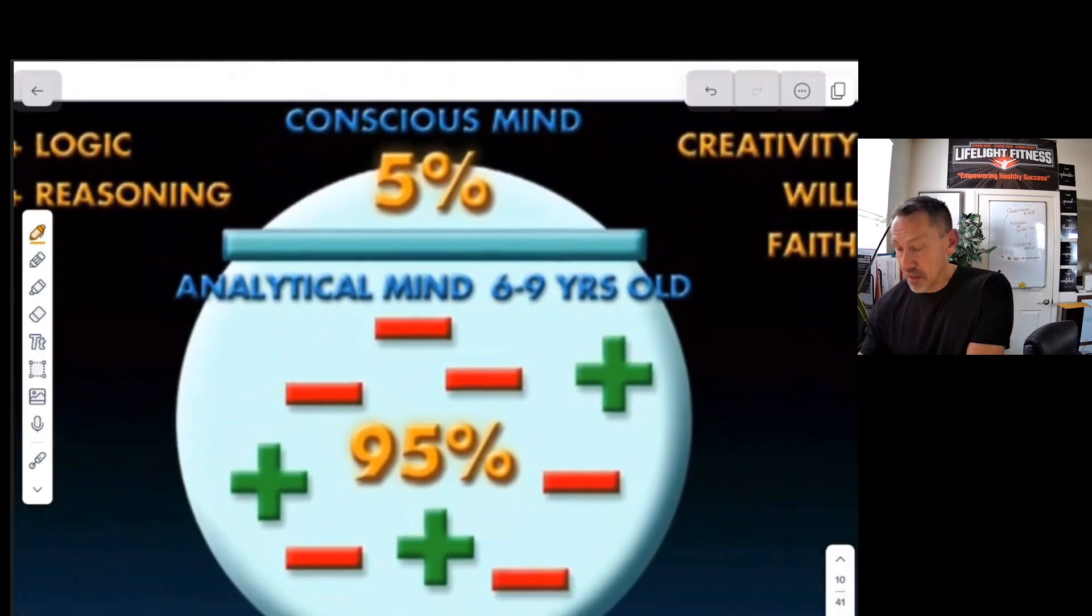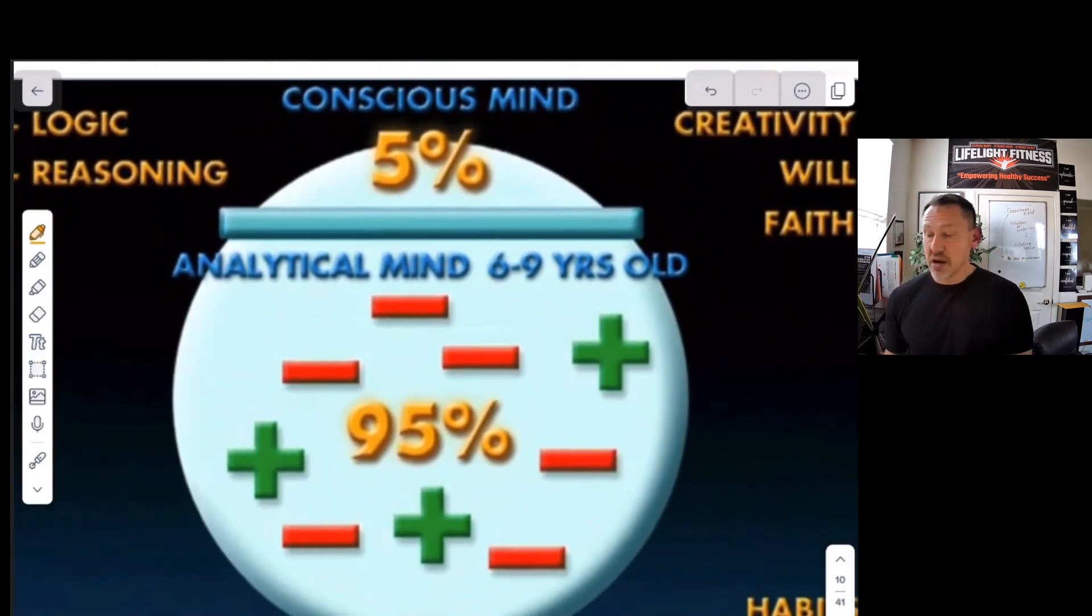Our brain, our minds, only 5% of what we decide to do is an impact of our conscious mind. Our prefrontal cortex, really smart, can be creative, figure things out. Everything else in our body, everything else in our life is running from the subconscious mind.